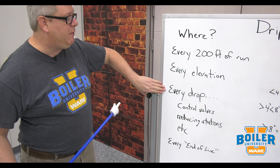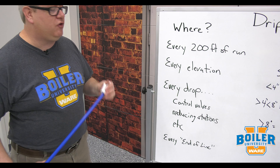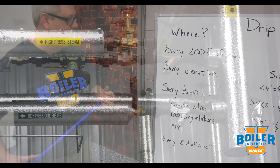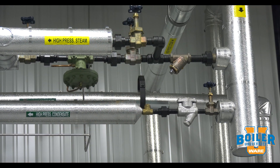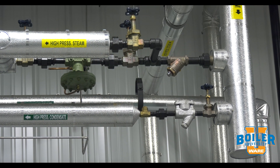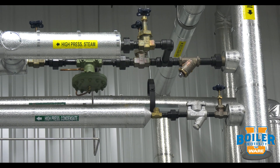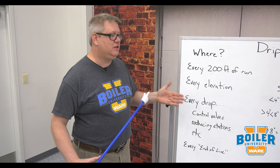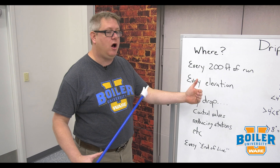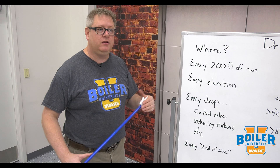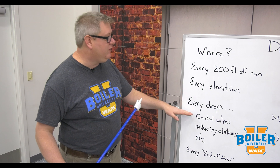At every drop — so if we've got control valves, pressure reducing stations, kettles, etc. — anywhere we're going to use steam, where we take off, we want to have a drip leg.